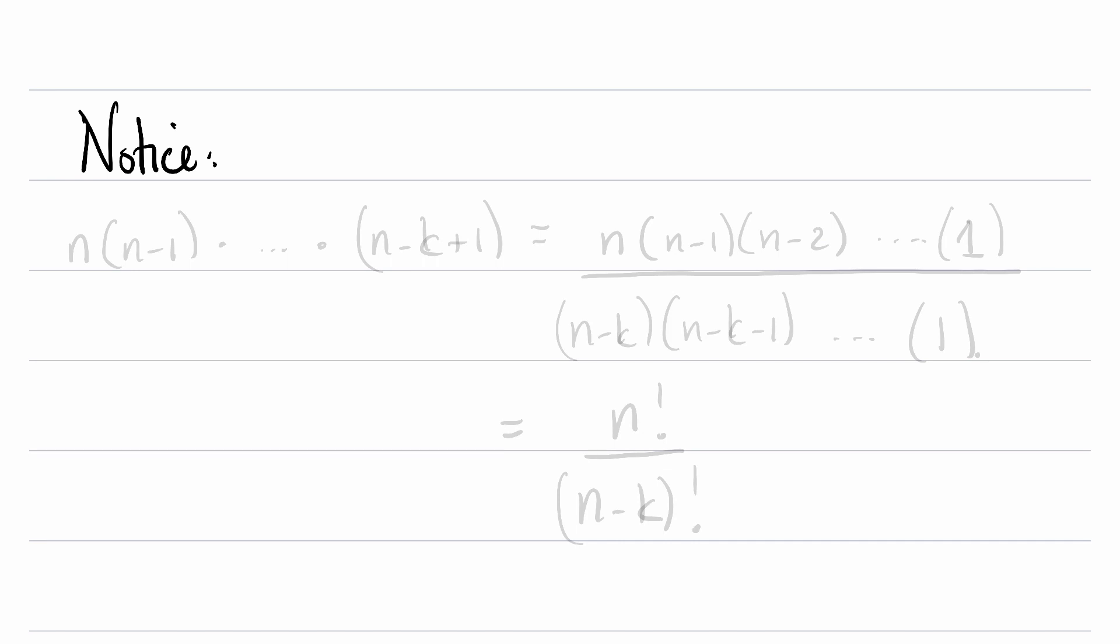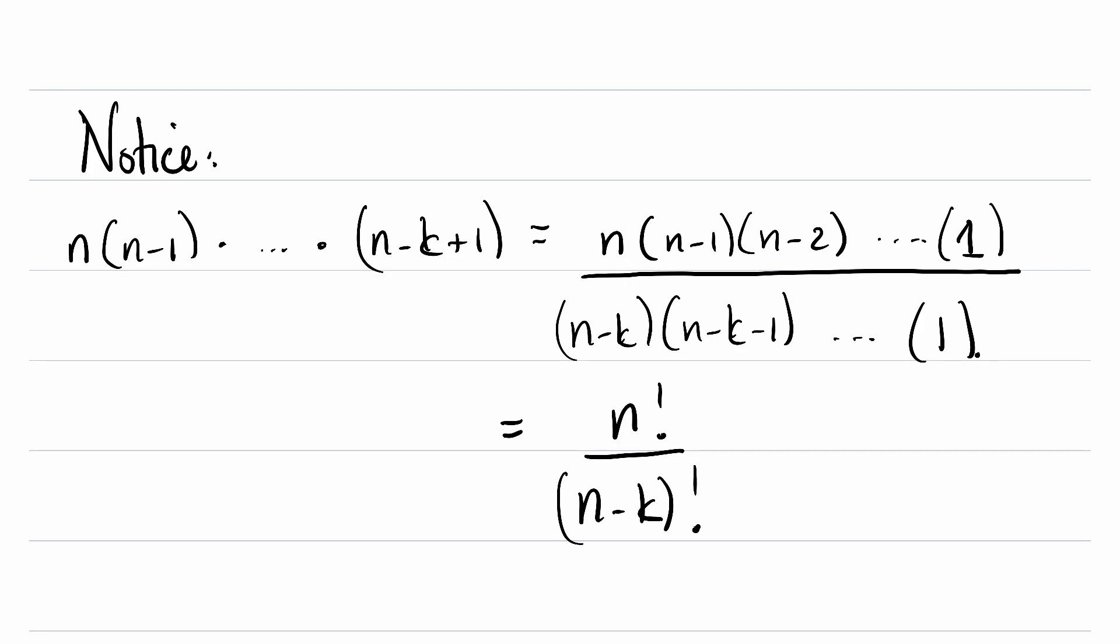The last thing I want you to notice, which will come into play a lot in our future lessons, is this last expression in our theorem. We're looking at n times (n minus 1) times all the way down to (n minus k plus 1). We can express this as a fraction: n times (n minus 1) times (n minus 2) all the way down to multiplying by 1, as long as we take out the factors that are missing on the left-hand side. So we're going to divide by (n minus k), (n minus k minus 1) all the way down to 1. This is n factorial over (n minus k) factorial. And remember what this represents: it is the number of lists of length k whose elements are chosen from a pool of n possible elements if repetitions are not allowed.